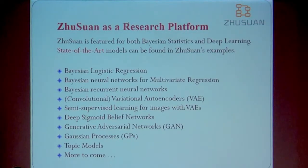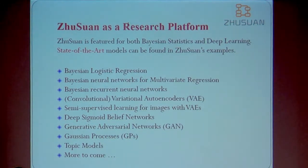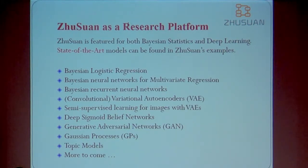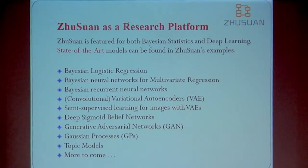We use this library as a research platform — it's part of the intersection of Bayesian methods and deep learning. We have implemented many models, including traditional Bayesian logistic regression, Bayesian neural networks, Bayesian recurrent neural networks, the vanilla and convolutional variational autoencoder, variational autoencoders with discrete variables, deep sigmoid networks, GAN networks, Gaussian processes, and hierarchical models like topic models. We are still working on more examples, and there are also other contributors implementing more models.